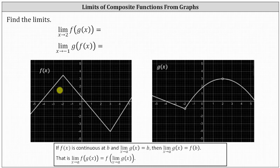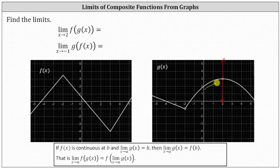We begin with the limit as x approaches two of f(g(x)). First, we determine the limit as x approaches two of the inner function g(x). Looking at the graph of g(x), we approach x equals two from the left and from the right. In both cases, we are approaching the y-value of positive three.